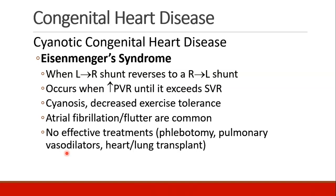Eisenmenger syndrome is when the left to right shunt reverses and becomes a right to left shunt. This occurs when pulmonary vascular resistance increases until it exceeds systemic vascular resistance. At that point, blood shunts from right to left, patients become cyanotic, and they can't tolerate exercise. They may develop atrial fibrillation or atrial flutter. There really aren't very many effective treatments for Eisenmenger syndrome — it's a pretty severe complication of long-standing congenital heart disease.